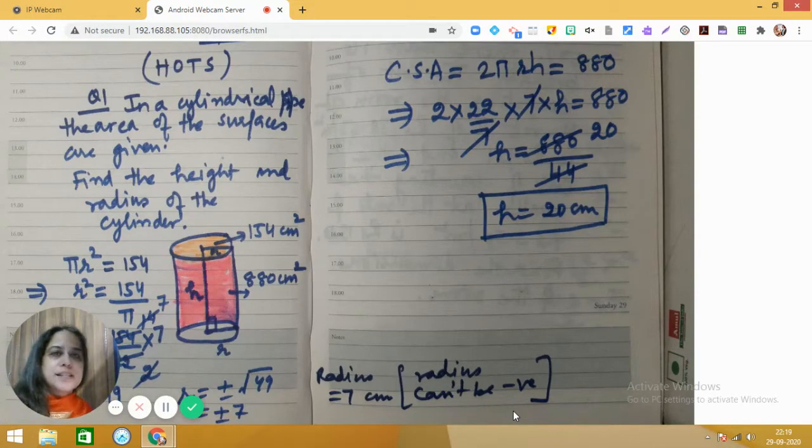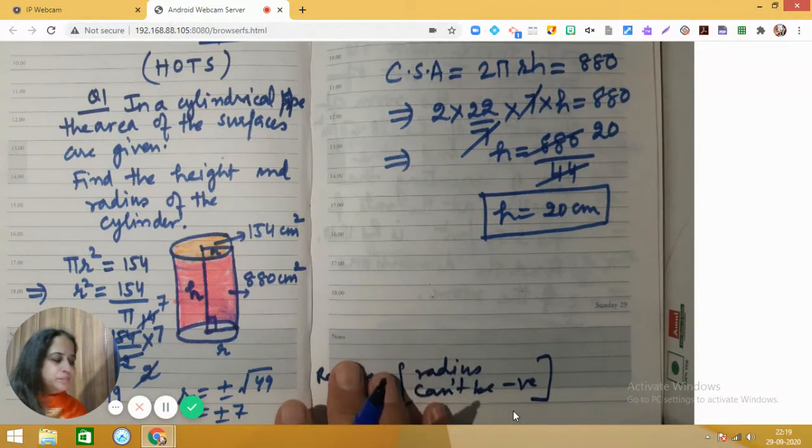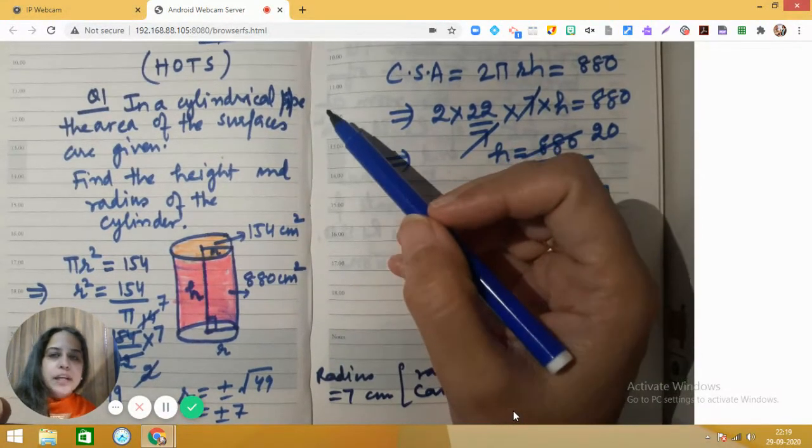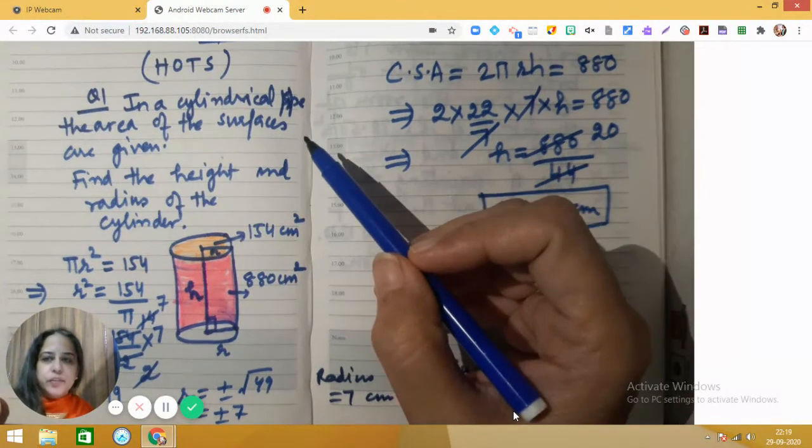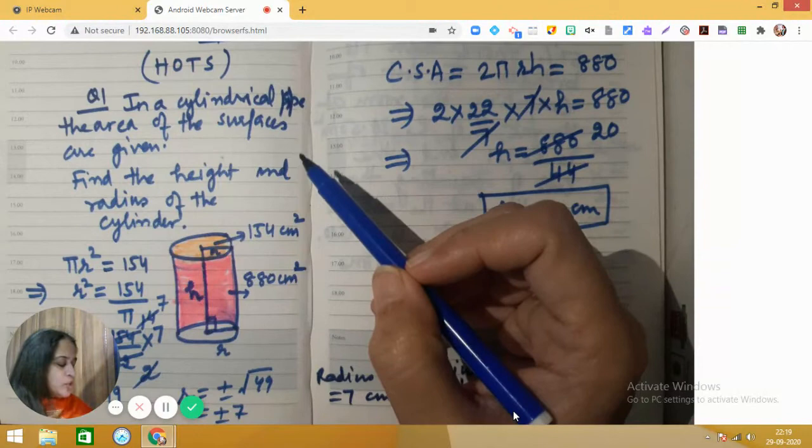Hello dear students, let us discuss this question from the chapter volume and surface area. In a cylindrical pipe, the area of surfaces are given. Find the height and radius of the cylinder.